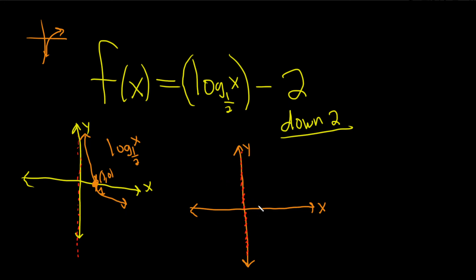So instead of 1 comma 0, it'll be 1 comma negative 2. So like right here, this will be 1 comma negative 2. And then our graph will look something like this.